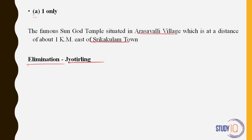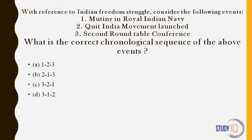Next question regarding chronology of Indian National Movement events. As I always say, don't mug up the years — remember what happened first and what came after. Sequence of events is more important. The mutiny in the Indian Navy (Royal Indian Navy) was in 1946 — the RIN Mutiny. Quit India Movement was launched in 1942. The Second Round Table Conference was in 1931. So the correct sequence was 3, 2, 1.